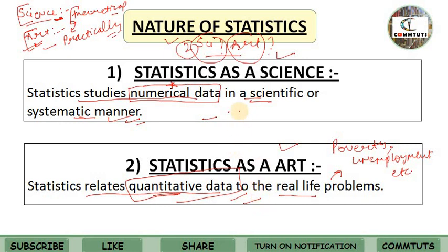So keep in mind: statistics is science because we study numerical data in a systematic and scientific way. Statistics is art because real-life problems are expressed in quantitative or numerical data. This was the nature of statistics.